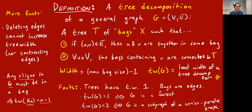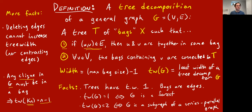Unlike in spectral graph theory, we're just considering ordinary graphs. Multiple edges are also fine — series-parallel graphs can naturally have multiple edges. For every edge, if it's together in some bag, you can have lots of parallel edges and you're still satisfying rule one of the tree decomposition.